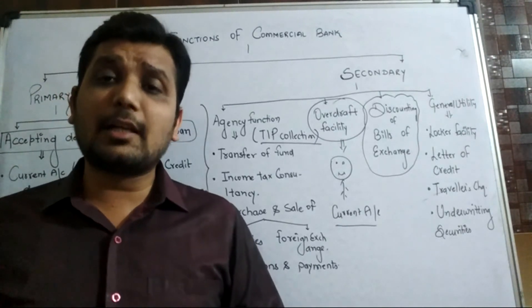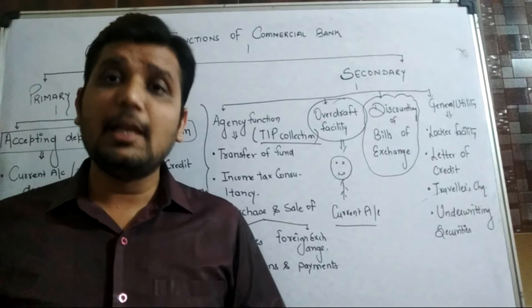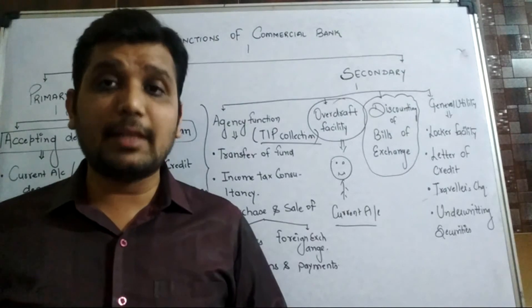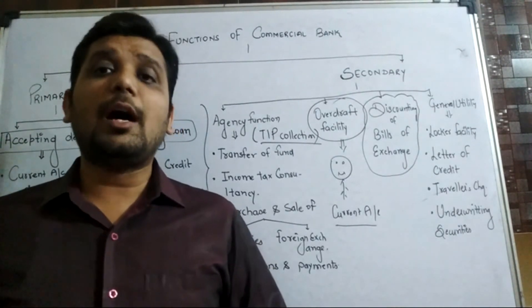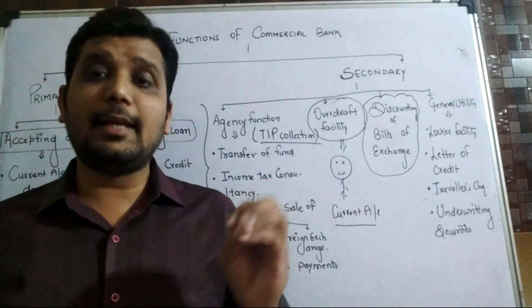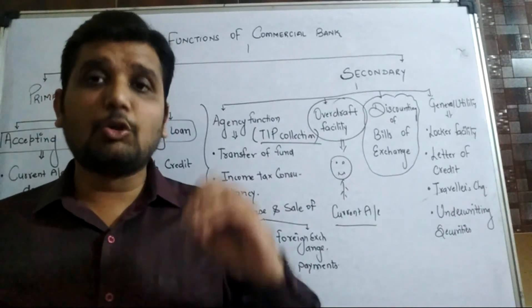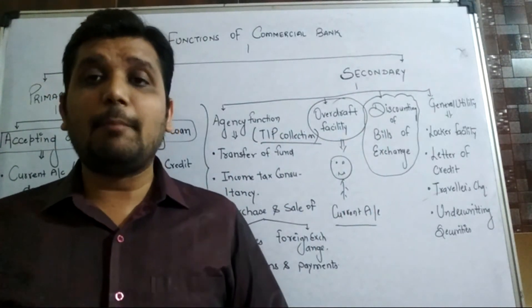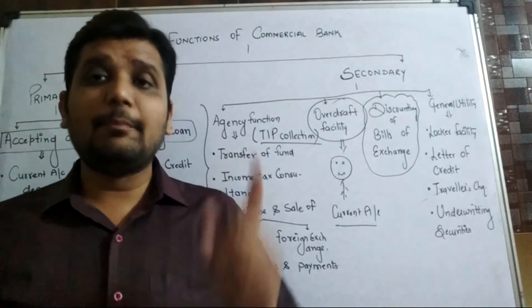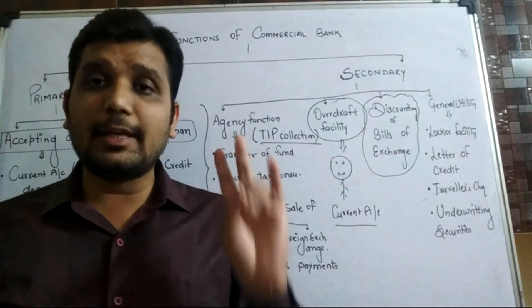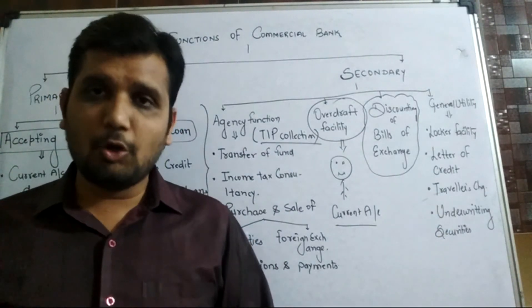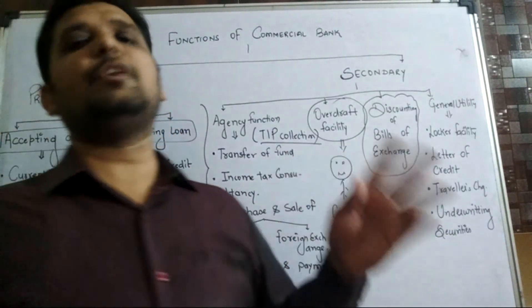And the last point: underwriting securities. When companies issue their securities or shares, minimum subscription is ninety percent. If ninety percent shares are not subscribed, subscription fails. So companies make banks as underwriters. Banks purchase whatever shortfall there is. Suppose public purchased seventy percent shares, minimum subscription is ninety, so twenty percent more is required. Then bank purchases twenty percent. That is called underwriting securities.